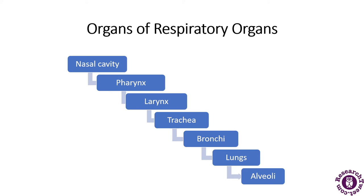Now, the main part of this topic is the organs of the respiratory system. The organs include the nasal cavity — the nose that is the exterior part — the pharynx, the larynx which is called the voice box, trachea, bronchioles, lungs, and alveoli where the exchange of gases takes place. We will be discussing each of these in detail.